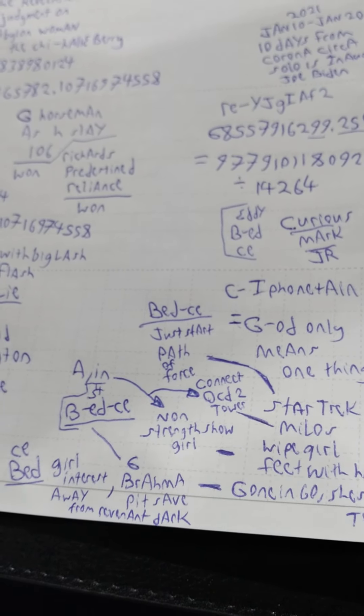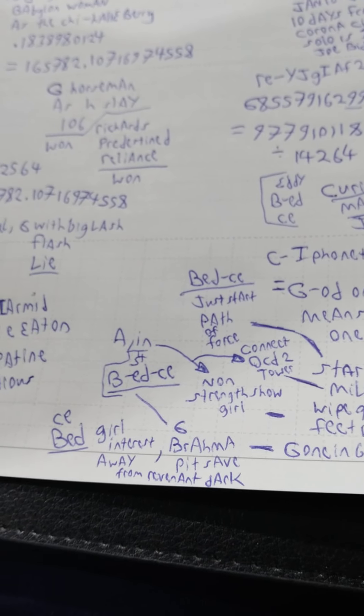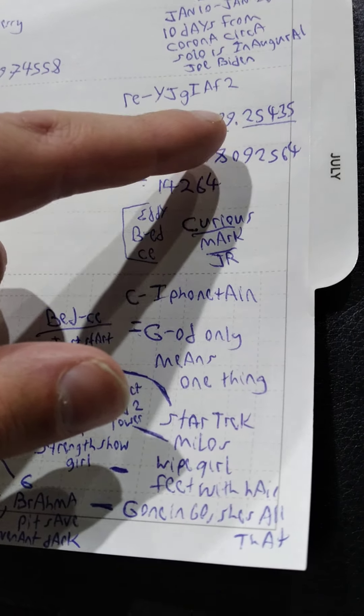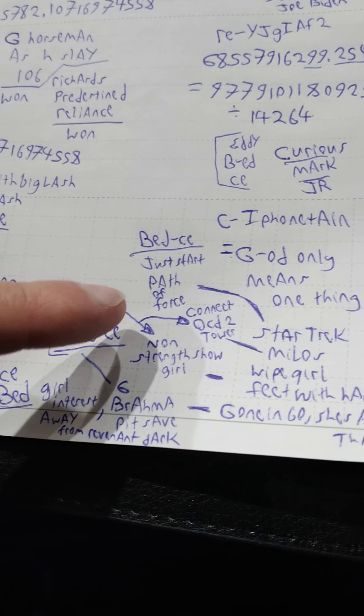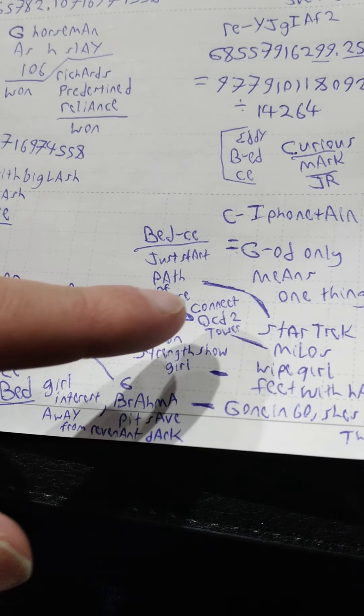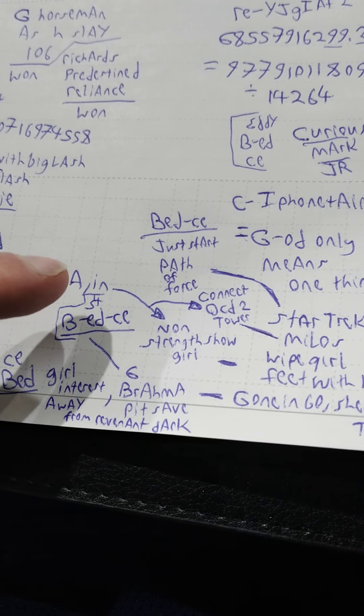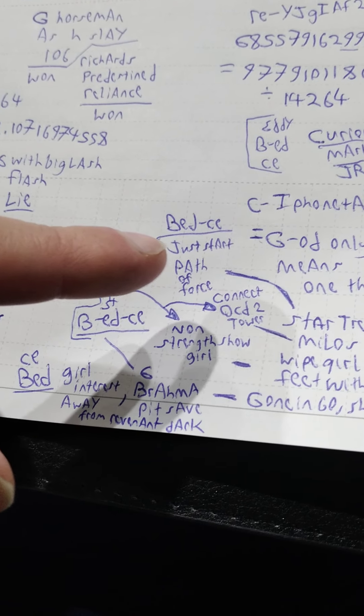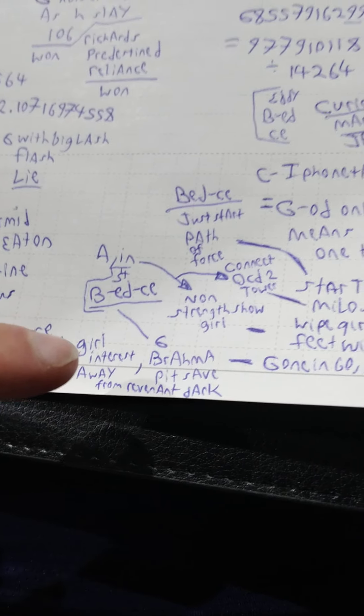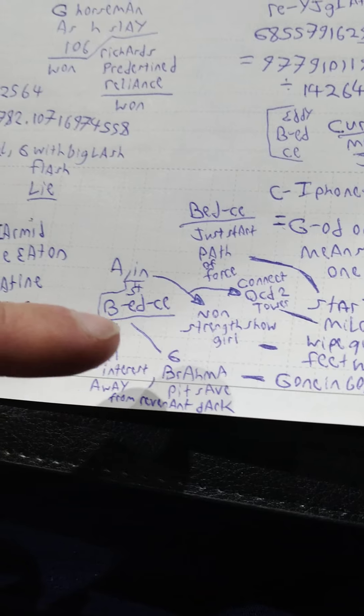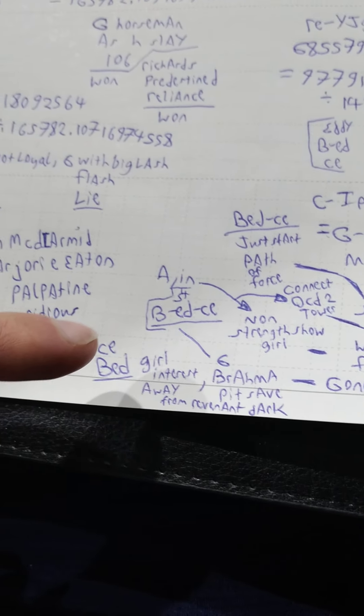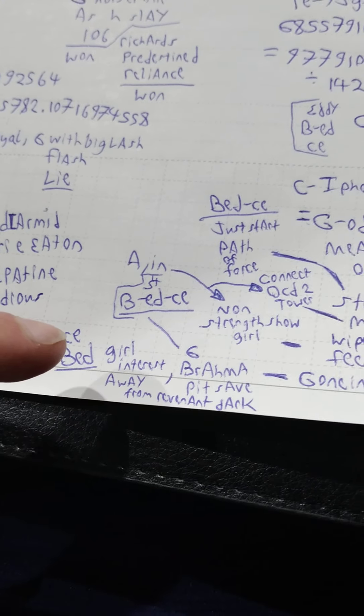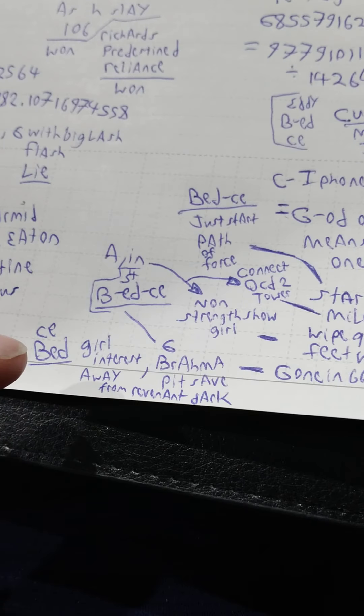It's called the one because one shows up in the Bible, kind of like the governor Zerubbabel. So I went over all those creatures and it's related to revelation 17. They have one mind. So now we're going off of a bed key. Just start path of force. Okay. Would be one thing. Bed key, connect OCD to tower, would be the A and the N there with non-strength show girl. Bed key was like the Thyatira, just start path of force. Brahma pit safe, as a six, would be, be as fit 54 key. Key bed girl interest, girl interests away from revenant dark would be the key bed there with the gone in 60 and she's all that.